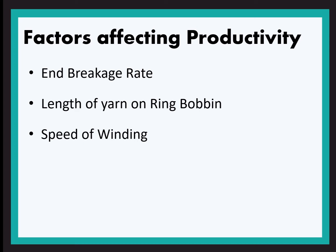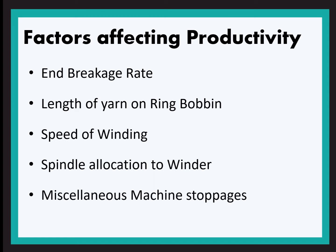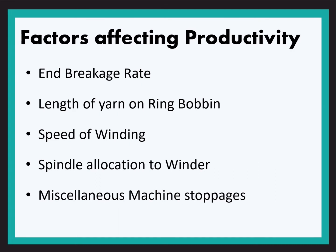The next factor is speed of the winding machine. The speed needs to be high but not very high so that there are breaks, and not very low so that the efficiency is reduced — it needs to be optimum. The next is spindle allocation to the winder: if a winder is allocated more spindles and there is a stoppage, it may take time for the winder to reach that spindle, affecting machine efficiency. The last factor is miscellaneous machine stoppages, which may be due to technical breakdowns or any other factor.